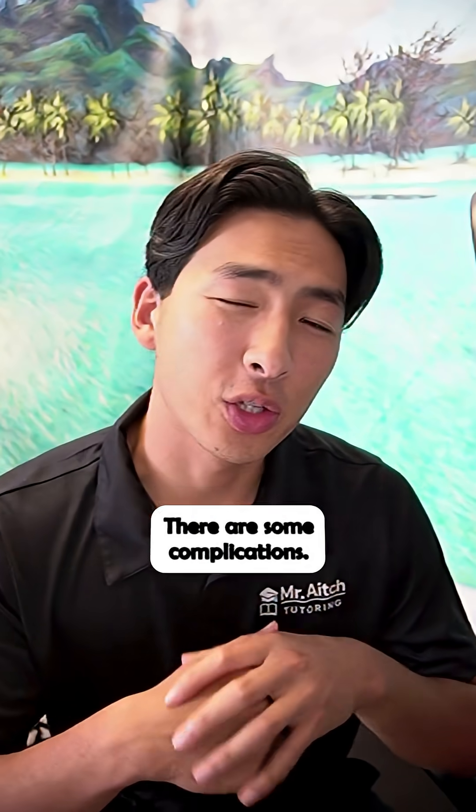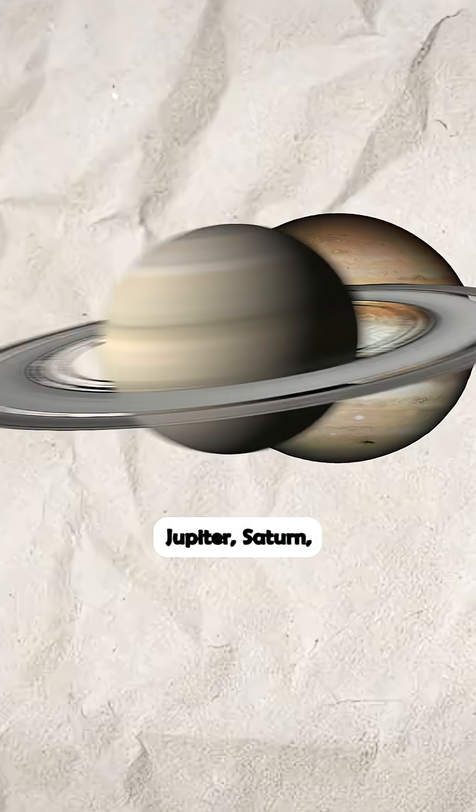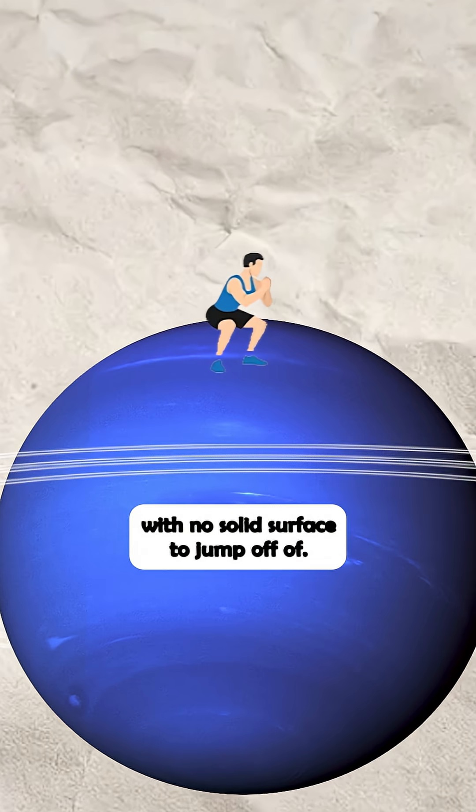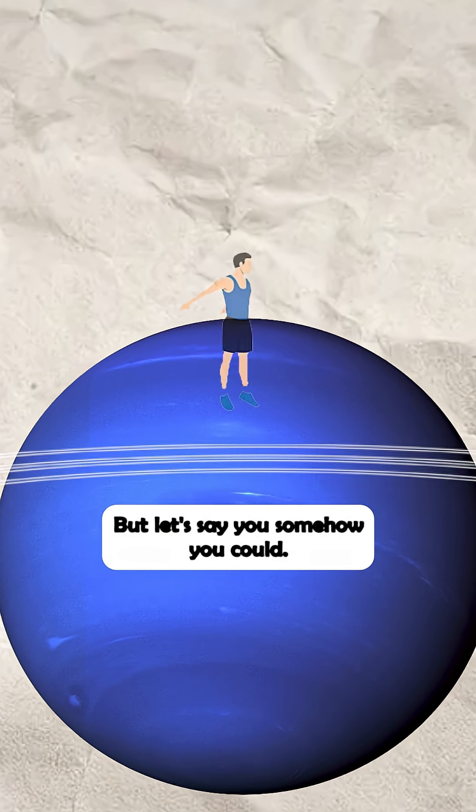The next couple of planets, there are some complications. Jupiter, Saturn, Uranus, and Neptune are all gas giants, with no solid surface to jump off of. But let's say somehow you could.